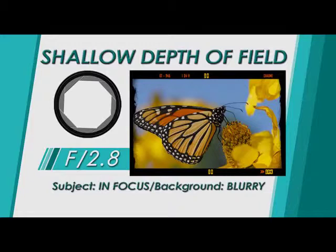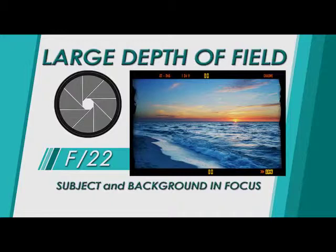The aperture or f-stop also controls what is known as depth of field. Depth of field is the range of your image that is in focus. The smaller the f-stop, the more shallow your range of focus or depth of field will become. The point that you focus on will always stay in focus, but the area in front of and behind that point may be blurry or sharp, depending on your f-stop. The higher the f-stop, the more area that stays in focus. The depth of field always begins from the focal point and grows from that point, depending on your aperture.